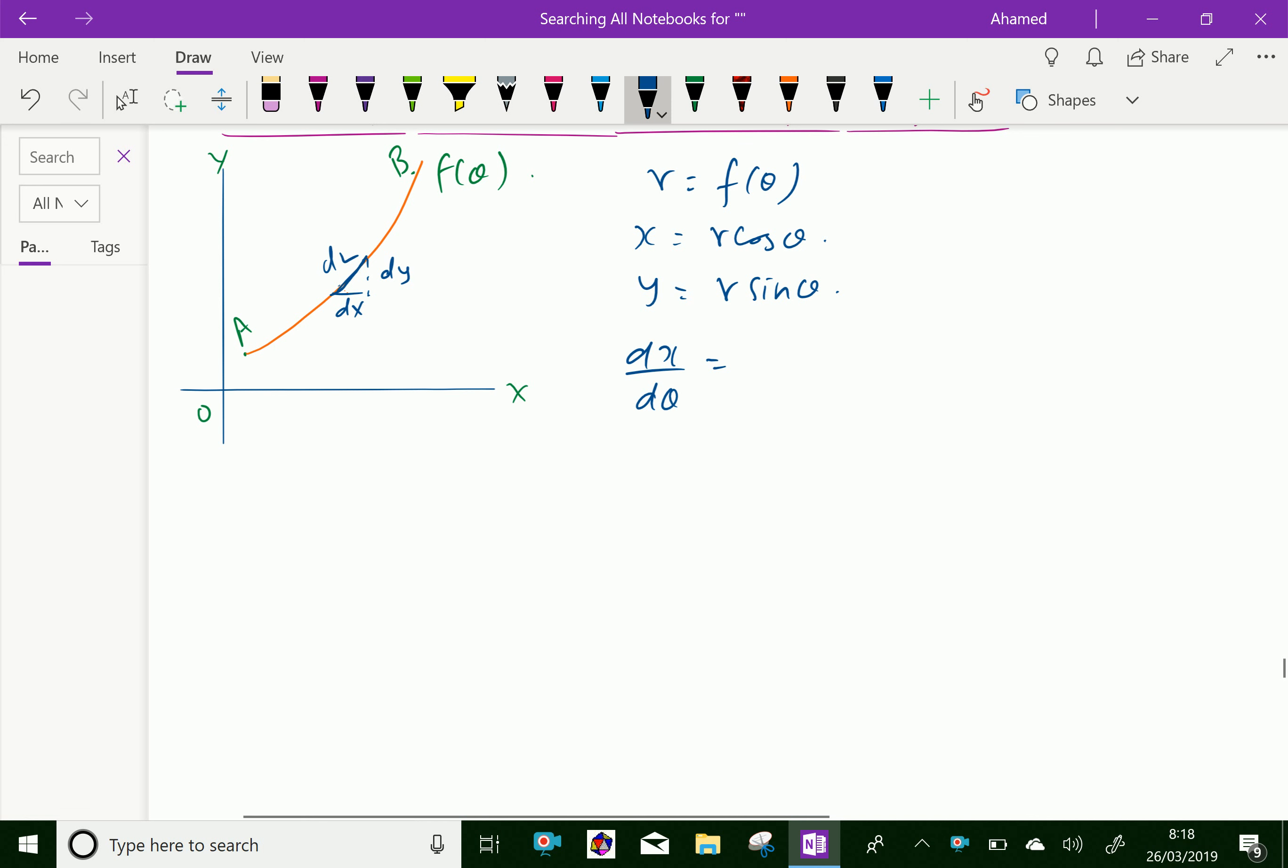Now we can write dL equals the square root. Therefore, dL equals square root of r square plus r dash square, where r dash is dR by d theta. So we can write dL equals square root of r square plus dR by d theta whole square d theta.